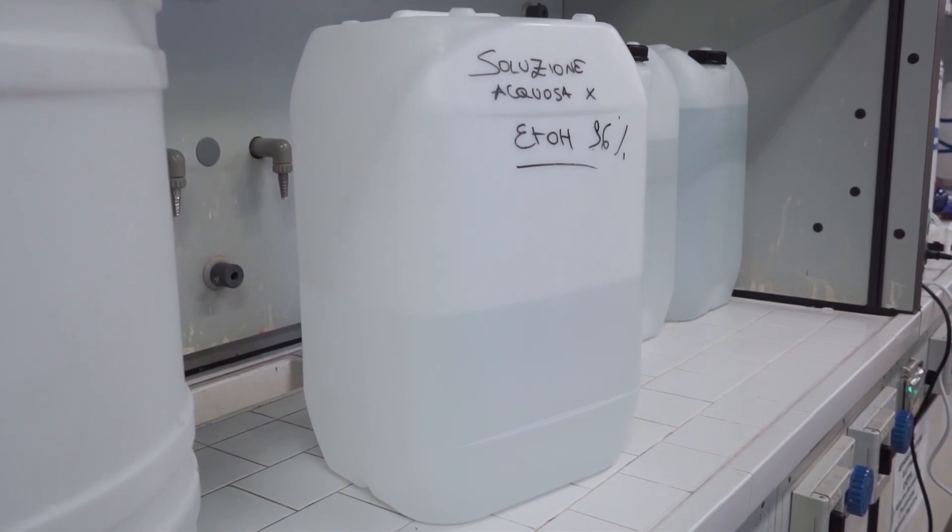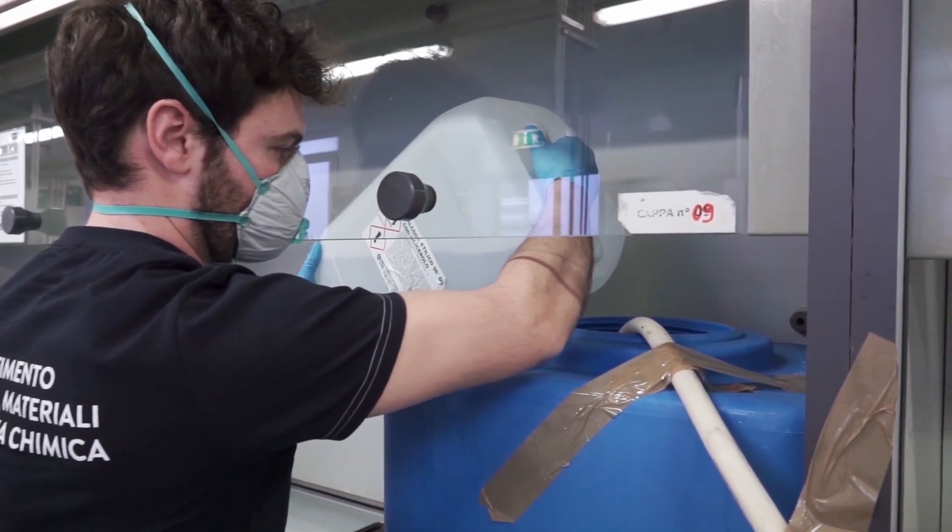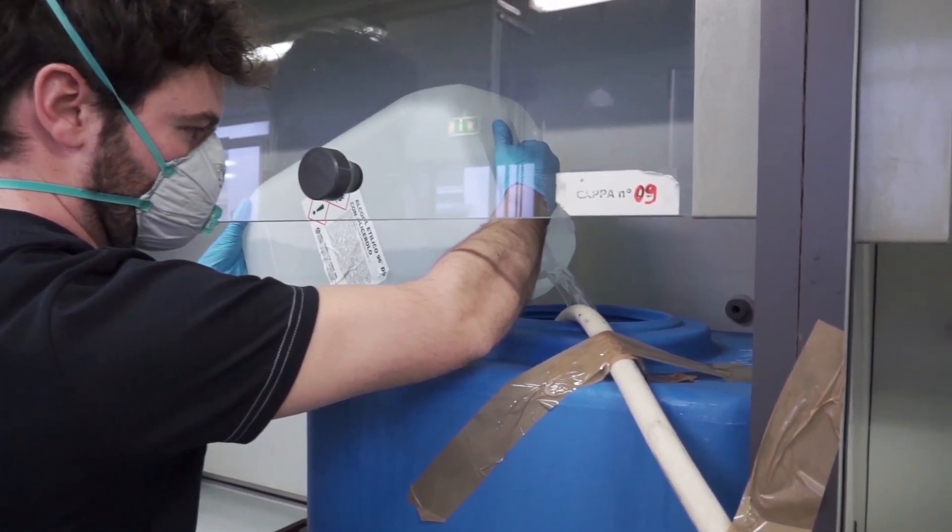In particular, the tank for the alcohol solution must be completely filled with 96% volume per volume ethanol and placed under the hood.